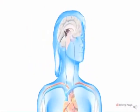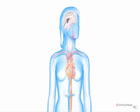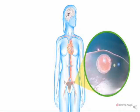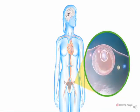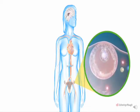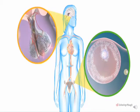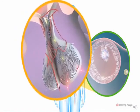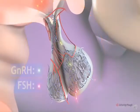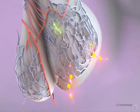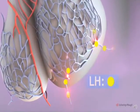FSH travels in the bloodstream to the ovaries, where it stimulates the formation and growth of an ovarian follicle. The follicle consists of an egg, surrounding cells that secrete estrogen, and fluid. FSH helps the egg mature and prepares it for release. As the follicle matures, the hypothalamus increases GnRH secretion, which in turn stimulates the pituitary to secrete luteinizing hormone (LH).